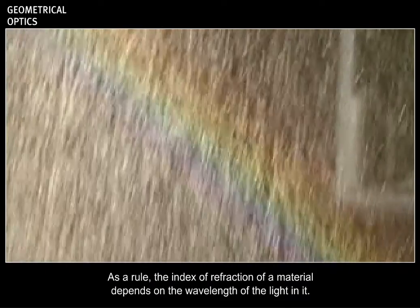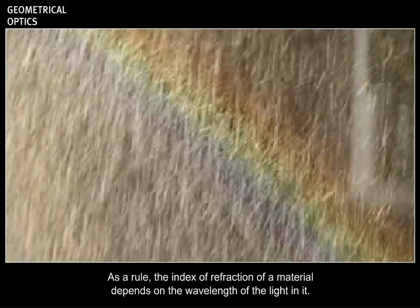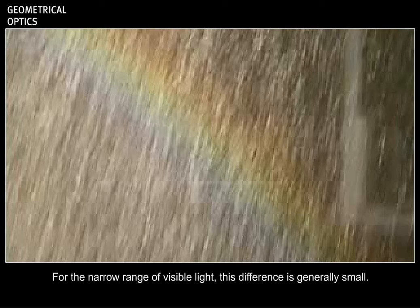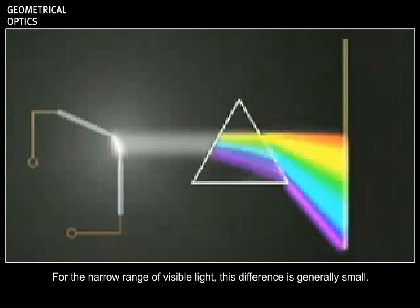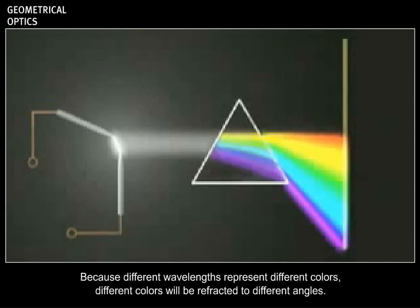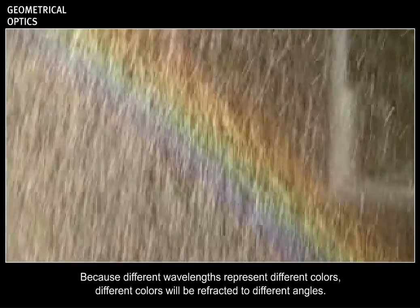As a rule, the index of refraction of a material depends on the wavelength of the light in it. For the narrow range of visible light, this difference is generally small. In some situations, it is important. Because different wavelengths represent different colors, different colors will be refracted to different angles.